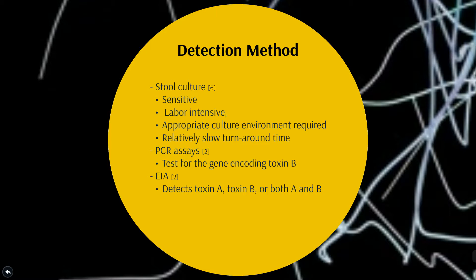PCR tests, which test for genes encoding toxin B, are highly sensitive and are especially well-suited for detecting toxin-producing C. difficile organisms. EIA tests detect toxin A, toxin B, or both A and B. Because they are same-day tests that are relatively inexpensive and easy to perform, they are popular with clinical laboratories.